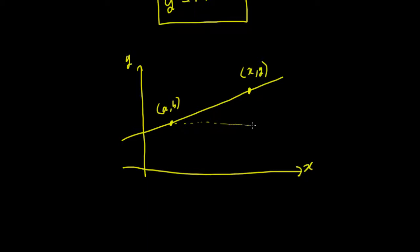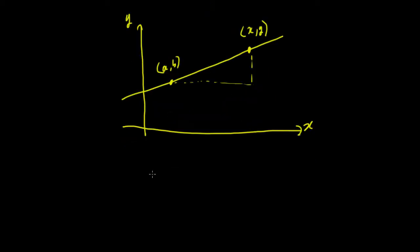Then we know that the gradient of that line m is equal to that distance there divided by that distance there. And we're able to say then that m equals, well, that distance there is it's that height which is y minus that height there which is our height b.